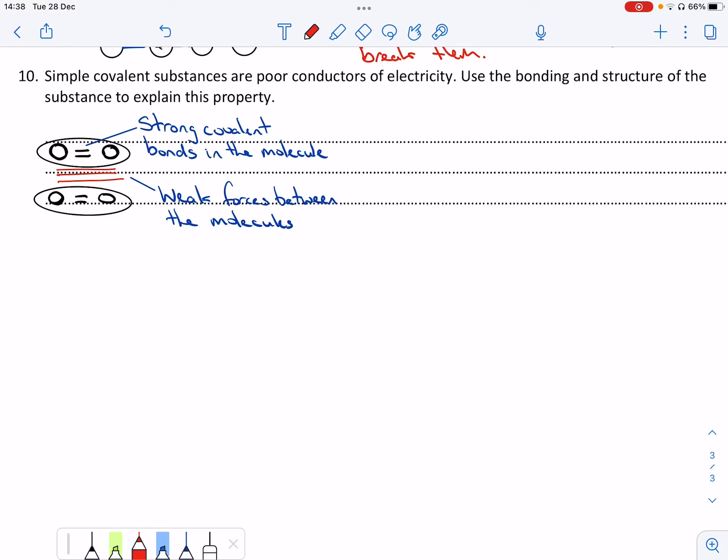Okay, this one here is telling me that simple covalent substances are poor conductors. Why is it that they are poor conductors? Well, this is our visual that we have for the structure of simple covalent substances.